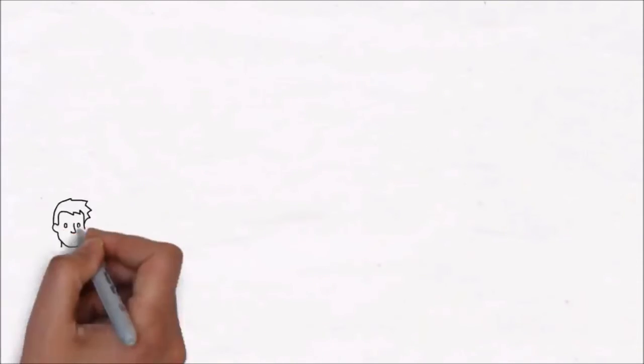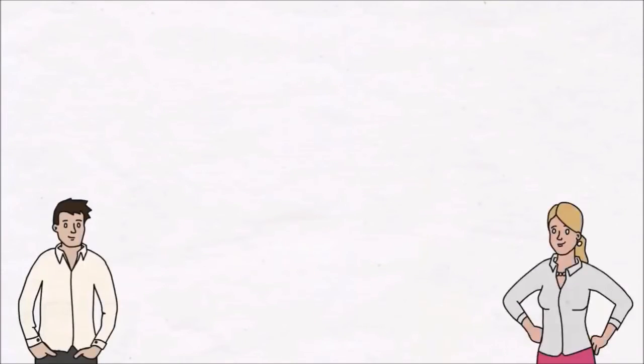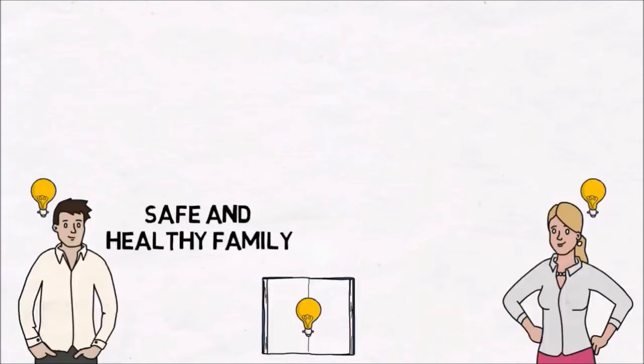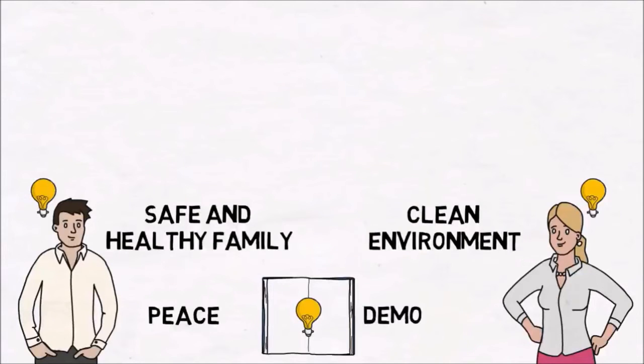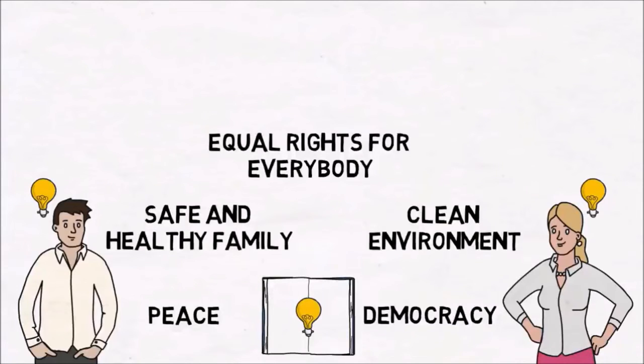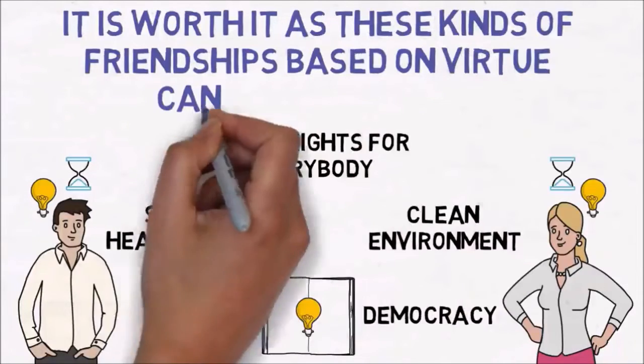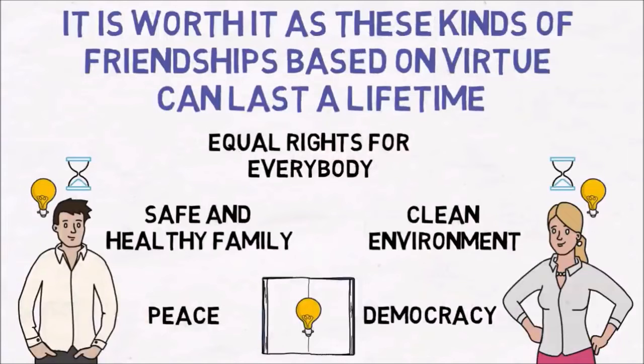We should find those people who share our values and principles in life. You can start by making a list with everything you really value. It can include anything from having a safe and healthy family, to a clean environment, peace, democracy, and believing in equal rights for everybody. Therefore, you wouldn't be able to make a deep connection with somebody who throws garbage on the grass, who doesn't recycle things, or who often expresses racist or sexist points of view. It will take time to find the right friends, but it is worth it as these kinds of friendships based on virtue can last a lifetime.